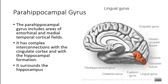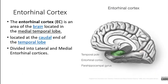The parahippocampal gyrus is very visible when you hold and remove the brain stem. It includes areas of the entorhinal and medial temporal cortical fields. The medial part of the temporal lobe is not very visible unless you manipulate the parts, and it has complex connections with the rest of the limbic lobe components. The entorhinal cortex is located in the medial temporal lobe at the caudal end, divided into lateral and medial entorhinal cortices — this is the cortex of the area called the uncus.